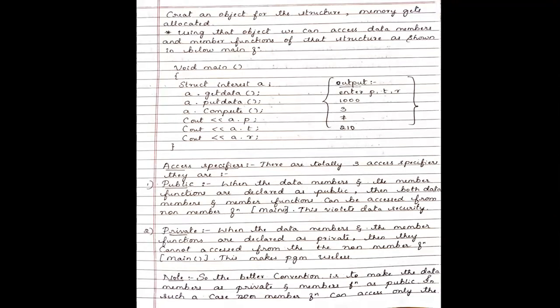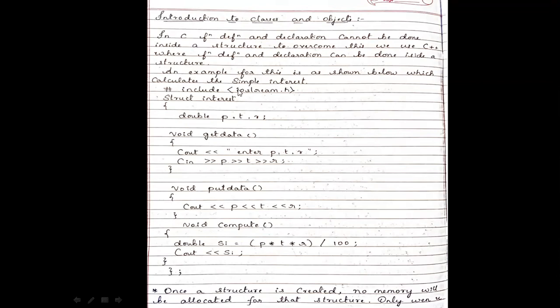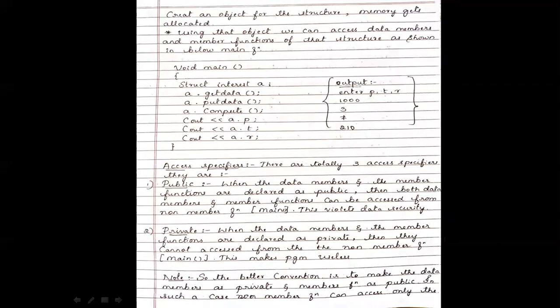In the main function, execution always starts from main. When we create a variable for the structure 'interest', memory gets allocated. Since we have three double variables — p, t, r — each takes 4 bytes, so 12 bytes total are allocated. Memory is allocated only when you create a variable for the structure.